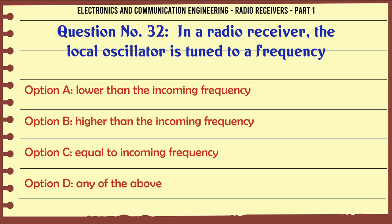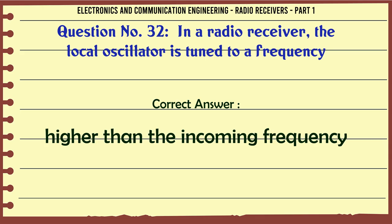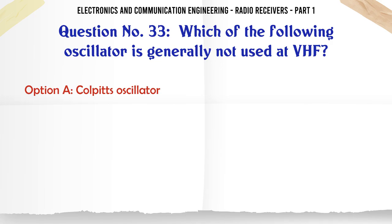In a radio receiver, the local oscillator is tuned to a frequency: A. Lower than the incoming frequency. B. Higher than the incoming frequency. C. Equal to incoming frequency. D. Any of the above. The correct answer is higher than the incoming frequency.